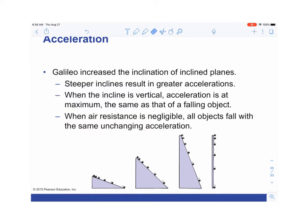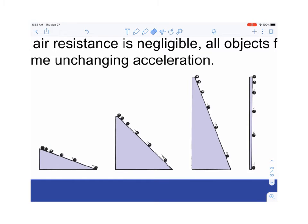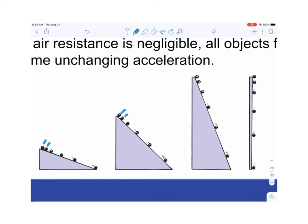Galileo increased the inclination of different inclined planes. Each photo of the ball represents one unit of time. With the least steep incline, the balls are relatively close together over the first unit of time. As the incline gets steeper and steeper, the distance between positions at each unit of time gets bigger and bigger.